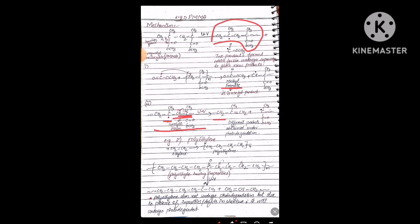The two electrons combine to form a pi bond, and this structure separates out with a double-bonded carbon present. So different products are obtained under photo-degradation. This was the example of polymethyl methacrylate.